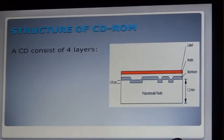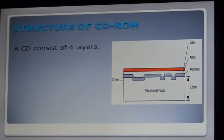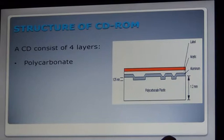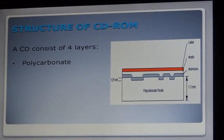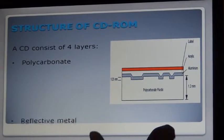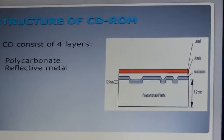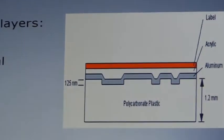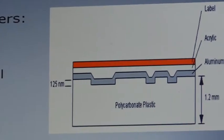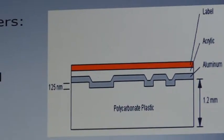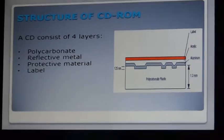The structure of CD-ROM consists of 4 layers, as we are seeing in the diagram. First, the biggest part consists of polycarbonate, which is normally 1.2mm, with a thin layer of reflective metal on top of the polycarbonate — this is made of aluminum. Then, a thin layer of protective material on top of the reflective metal. The last part is a label or screen lettering on top of the protective material.